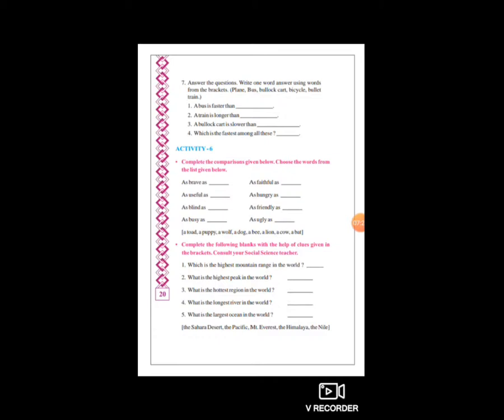Activity 6 - Complete the comparisons given below. Choose the words from the list given below. ઉપર comprehension આપેલા છે, એનાં નીચે અમુક શબ્દો આપેલા છે. હવે એમાંથી આપણે જોવાનું છે કે આ માટે યોગ્ય કઈ વસ્તુ છે.